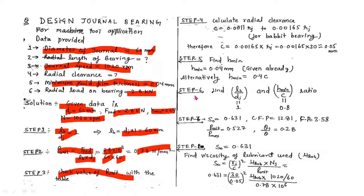Step 6: Calculate the L/D ratio and h_min/c ratio. The L/D ratio = 1 from Step 1. The h_min/c ratio = h_min / c = 0.04 / 0.05 = 0.8. So L/D = 1 and h_min/c = 0.8.